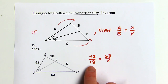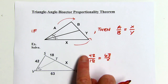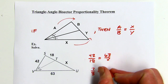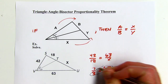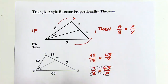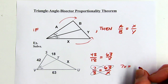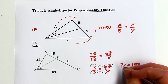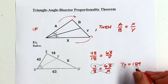Looking at that fraction, both 42 and 18 are divisible by 6, giving 7 over 3. That gives smaller numbers for cross multiplying. So 7x equals 3 times 63, which is 189. Dividing by 7 gives x equals exactly 27.